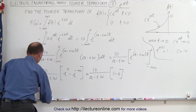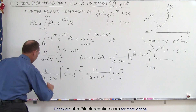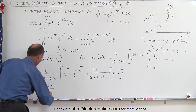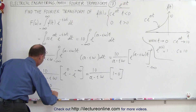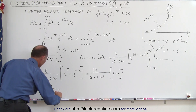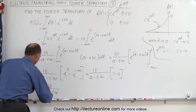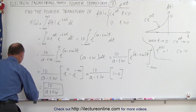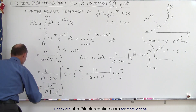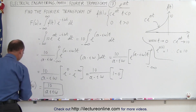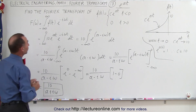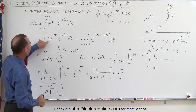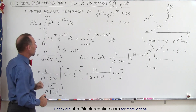And so finally, the Fourier transform simply will be 10 divided by a minus i omega. And there you go — that's the Fourier transform of our input function, when our input function is equal to 10e to the at. And that's how it's done.